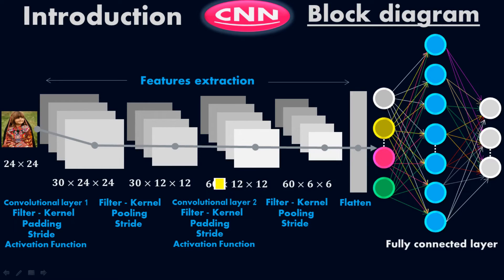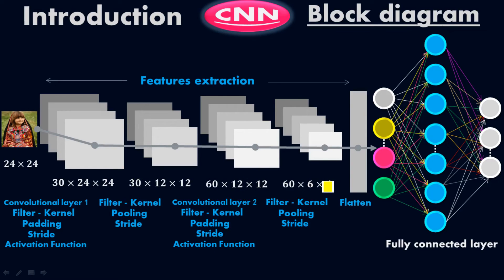The 60 filters can serve different purposes: edge detection, color detection, black spot detection, border detection — different filters have different functions. Then in the next stage we do pooling and stride again, with 60 filters of size 6 by 6. So from 24 by 24 we came to 12 by 12, and from 12 by 12 we came to 6 by 6. We have reduced the image to 6 by 6, which means we have ignored many pixels and extracted only the important features.